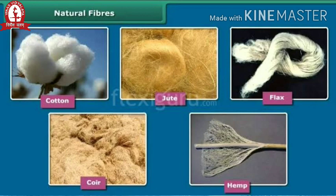Natural fibers are of two types: plant fibers and animal fibers. Plant fibers are those obtained from plants, for example cotton and jute. Animal fibers are those obtained from animals, for example wool and silk.